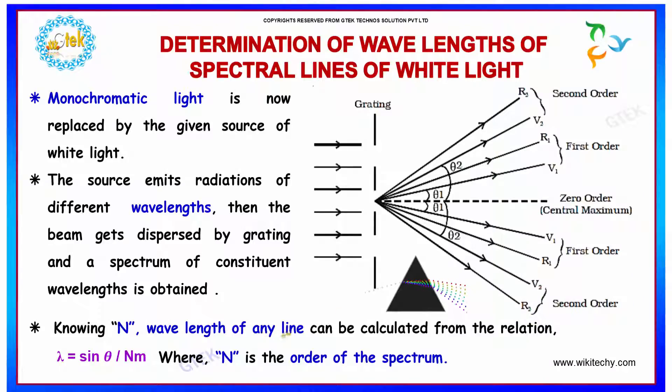Knowing n, wavelength of any line can be calculated from the relation lambda equals sin theta divided by n m, where n is the order of the spectrum.